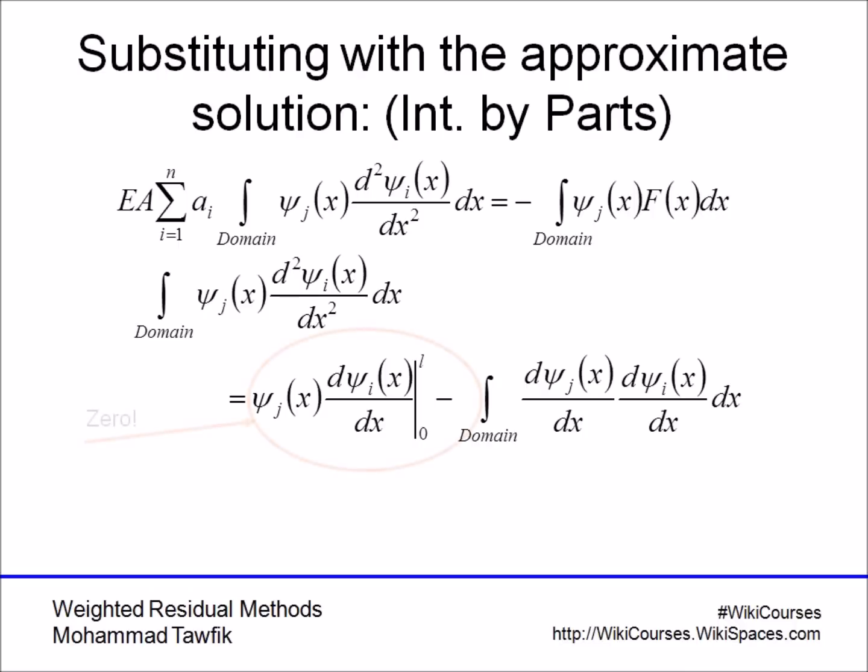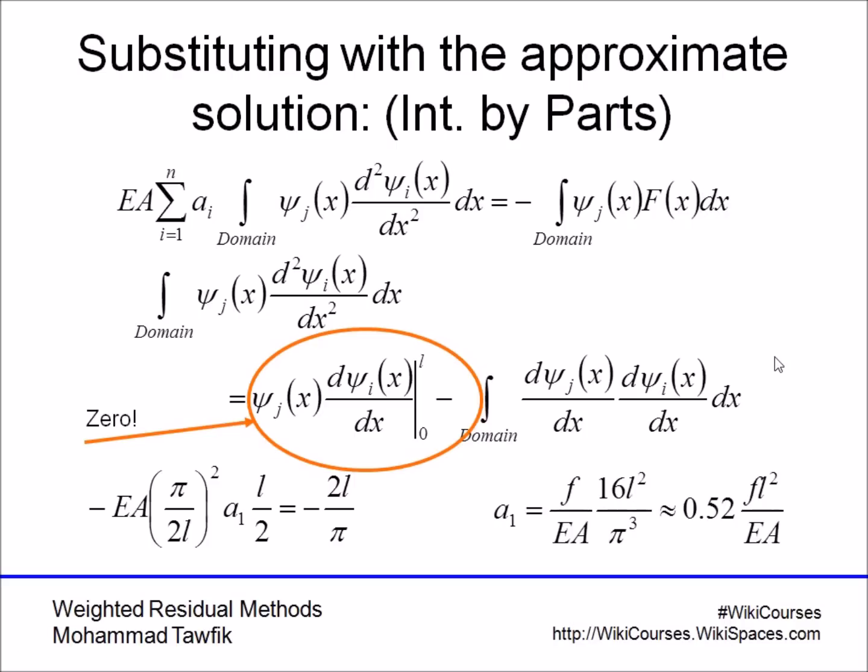Now, this term turns out to be 0. Remember that ψ_j is equal to 0 at x equals 0, and dψ/dx is equal to 0 at x equals l. So this boundary term is actually 0 all the time. Now, plug that back into the equations you have. Actually, integrating cosine times cosine will get you the same result as integrating the sine times sine, and you end up with the same solution.